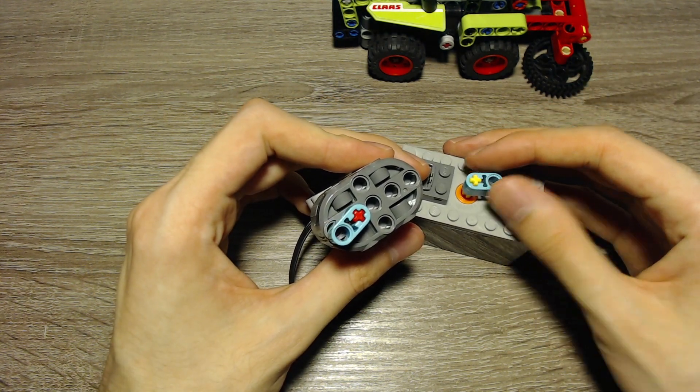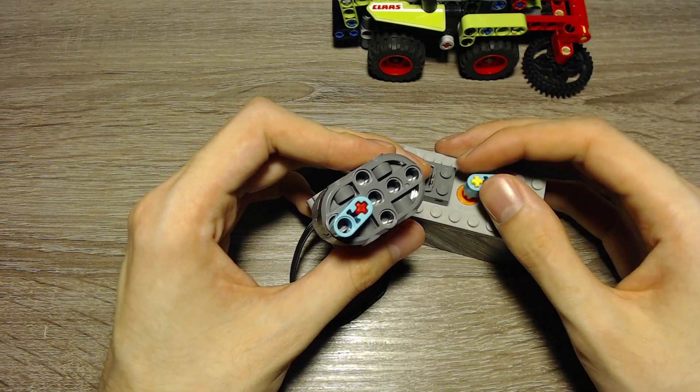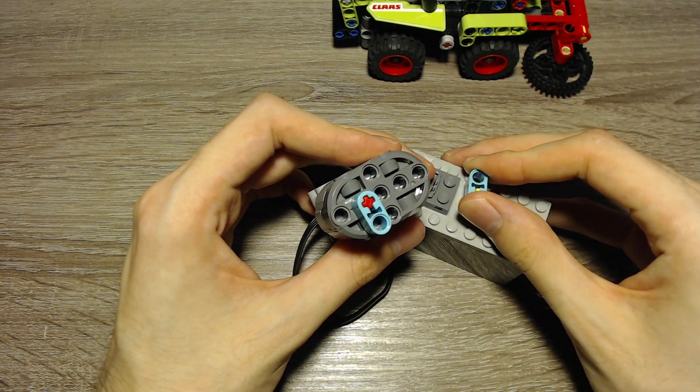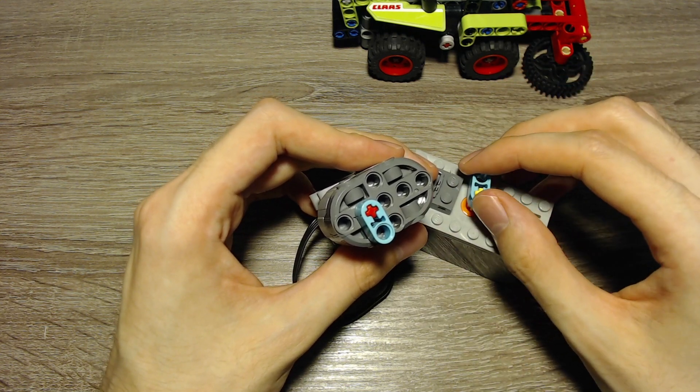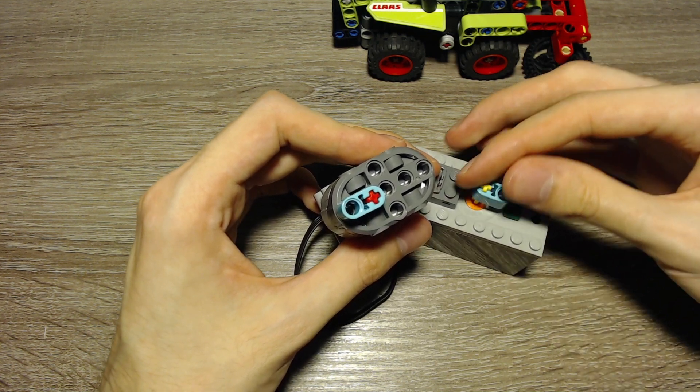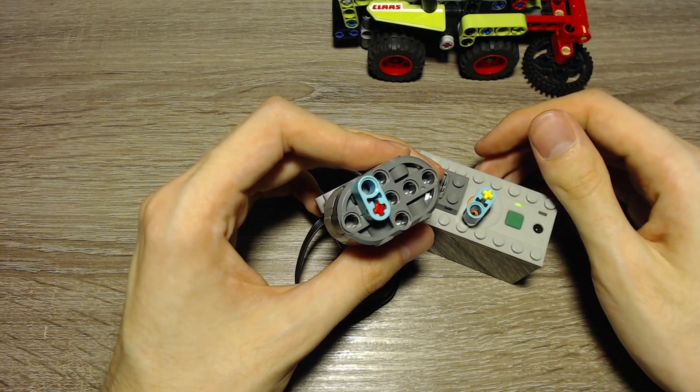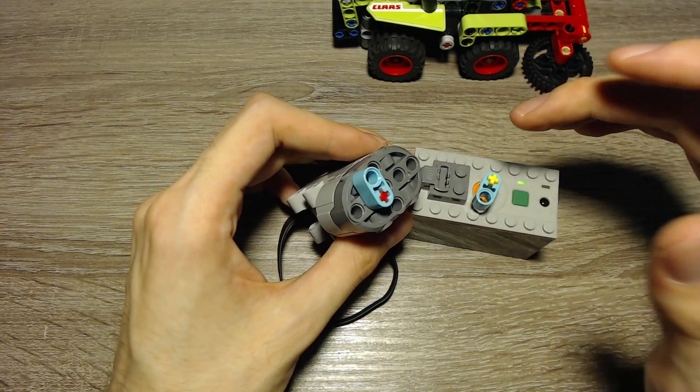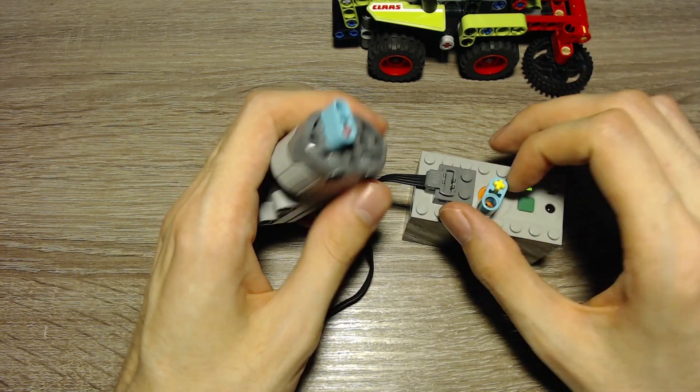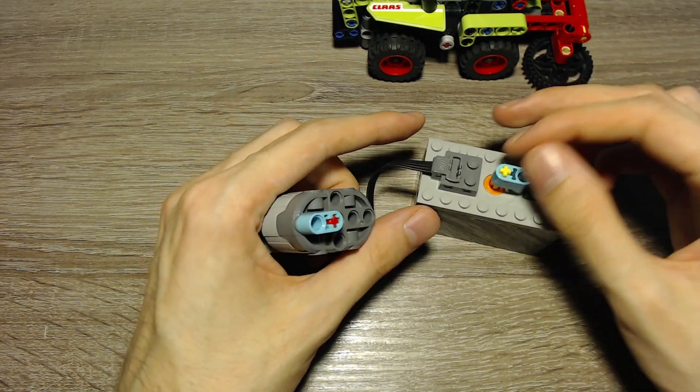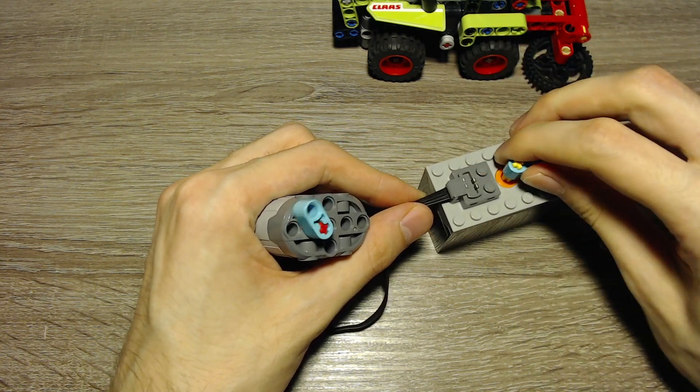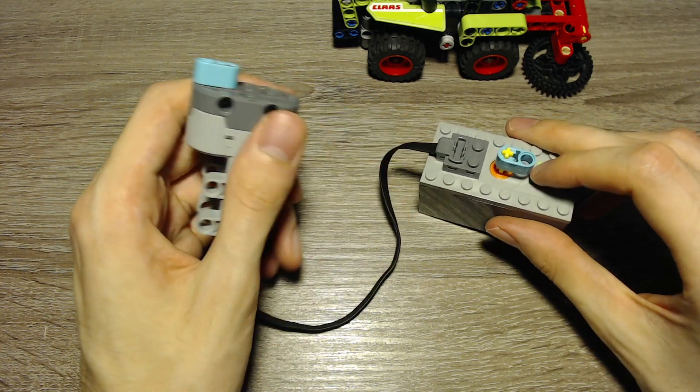And now I can move the switch a bit and the motor will move a bit. So we have several positions for the motor up to 90 degrees. The same applies into the other direction. Here we can select a position of up to 90 degrees. You won't have this precise control of the position with the normal Power Functions remote. So you only have three positions, the two maximum positions and the zero position. So that's how this servo motor works.